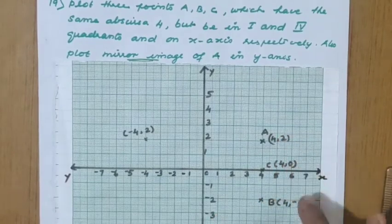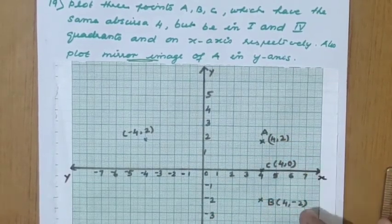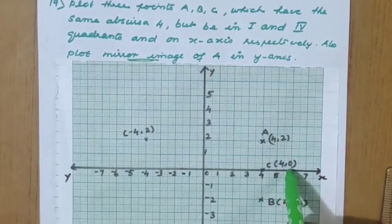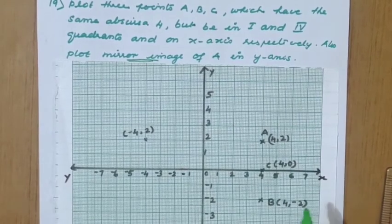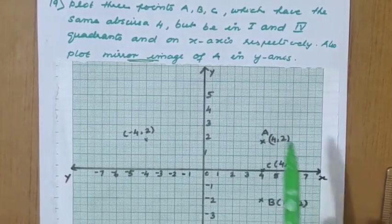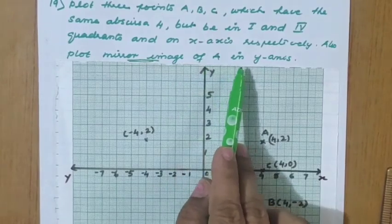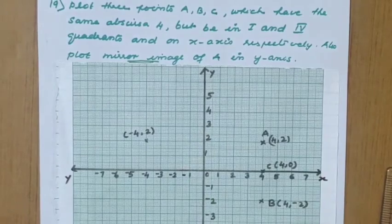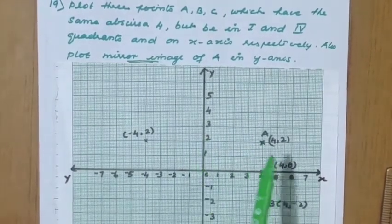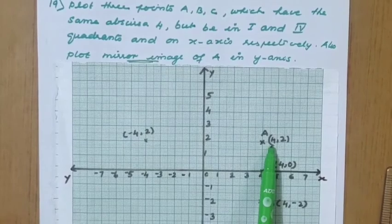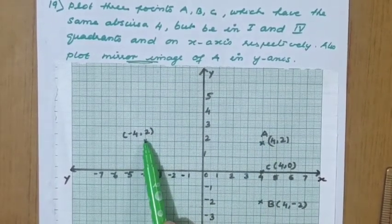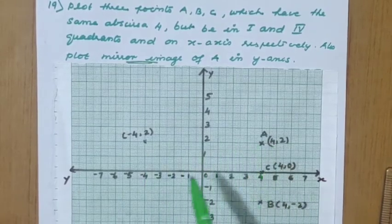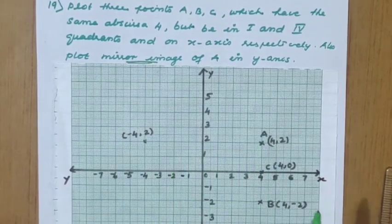Now for the mirror image of A in the y-axis: the y-axis acts as the mirror. For point (4, 2), the mirror image across the y-axis is (−4, 2) — the x-coordinate changes from positive to negative. Same distance from the mirror on both sides.